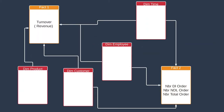In this video, we are going to use a schema that contains two fact tables and four dimensions. The first fact table contains the revenue, and the second contains the number of orders, number of non-delivered orders, and number of total orders. For the dimensions, we have dimension time, employee dimension, customer dimension, and finally the product dimension. So we are going to see how we use this schema in different ETL tools. Thank you for watching.